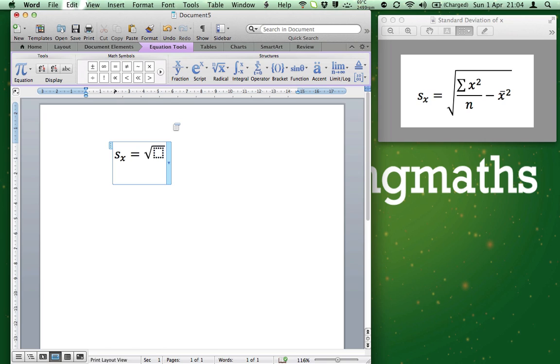Click it and select the first one. We now have a square root with a dotted box inside. Inside the dotted box, we're going to write the rest of the equation. Click the dotted box.